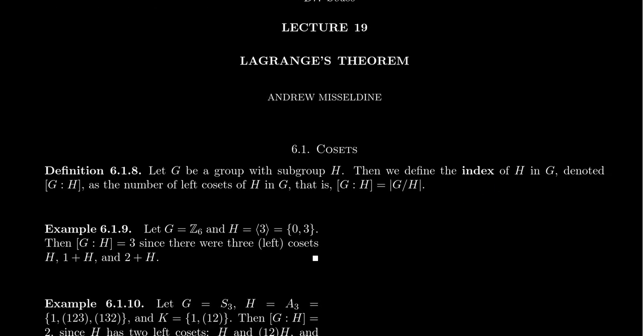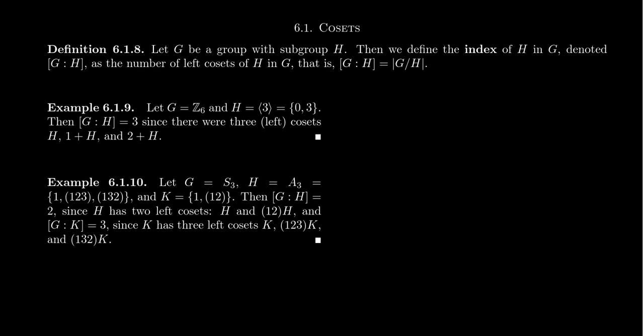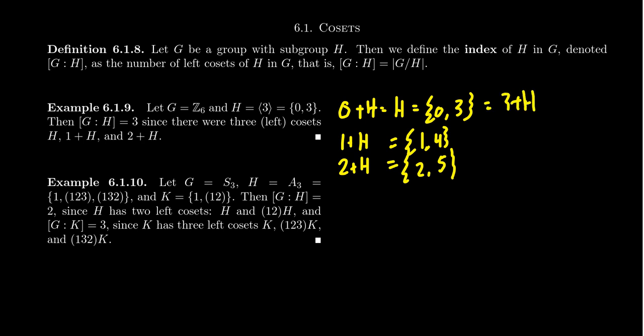So let's look at some examples, that is let's revisit some examples we saw previously. So recall that if H is the cyclic subgroup generated by 3 inside of Z6, we saw previously that the cosets looked like the following: 0 plus H was equal to H. We had that 1 plus H was a coset. We had 2 plus H was a coset. And we can be specific here: we have {0, 3}, we also had {1, 4}, and we had {2, 5}.